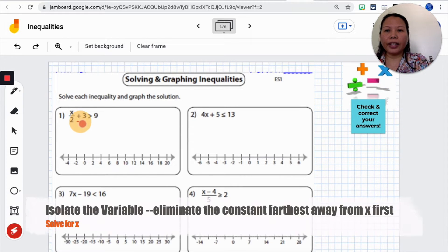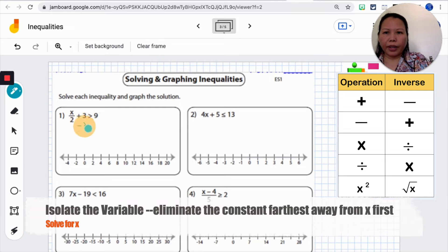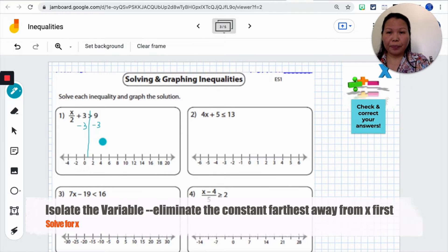So the inverse of adding 3 will be minus 3. And I will also have to do that to both sides just because I have an inequality. It doesn't mean that I only do it to one side. And remember this is our river line and keep our inequality straight. I'm going to draw a line underneath and we will simplify.